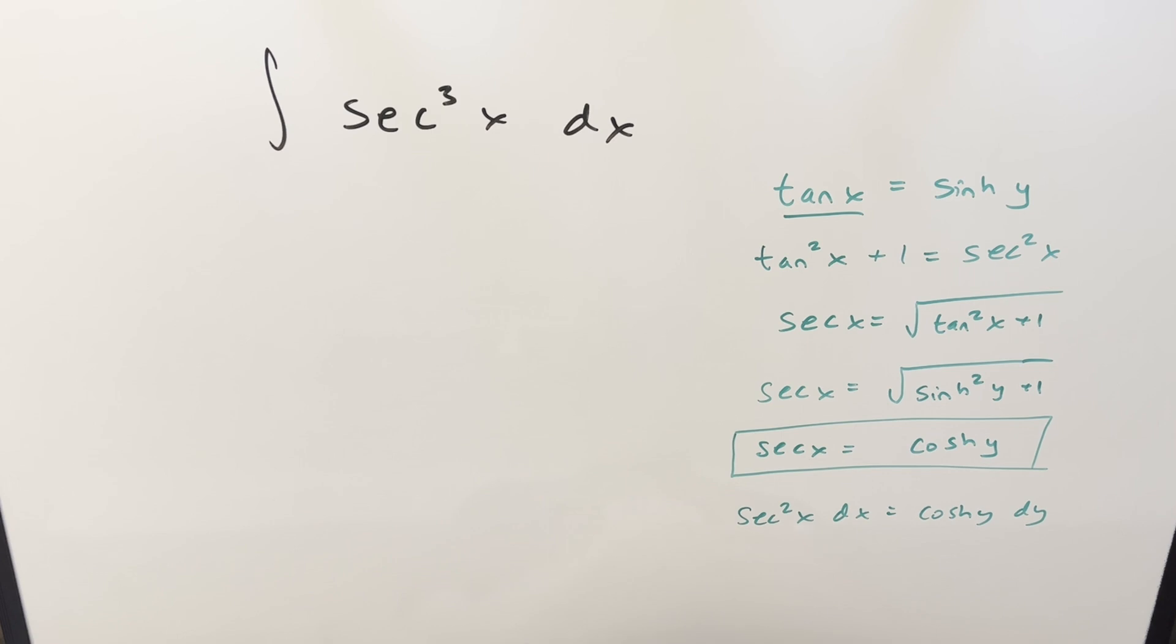Derivative of this is going to be just cosh y dy. And should I solve for dx or dy? I don't think it really matters. So let's do dx. We'll have this as cosh y dy over secant squared. We'll divide by secant squared on both sides, but secant we can express as cosh. So I can write this as cosh squared y.